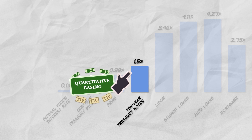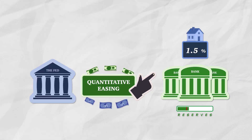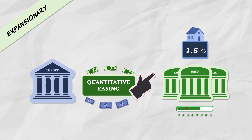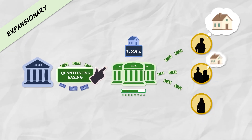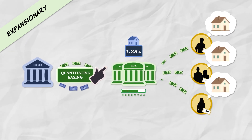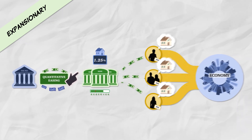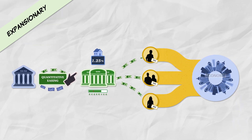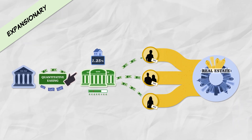In addition, by purchasing mortgage securities, the Fed can help to ensure that lower interest rates also translate into lower mortgage interest rates, and that will help out home buyers and, one hopes, spur the purchase and creation of new homes.